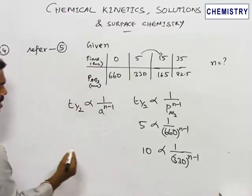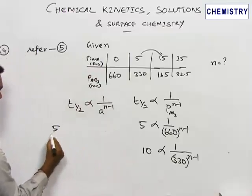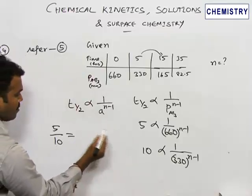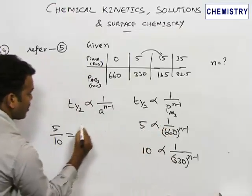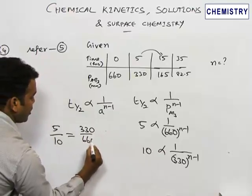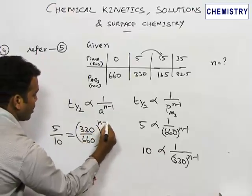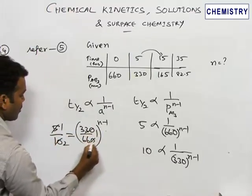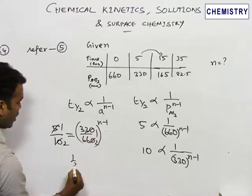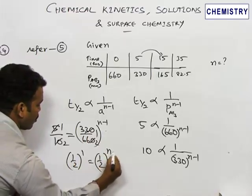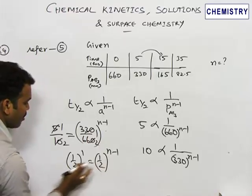Just divide these two, you will get the order for the reaction. So 5 by 10 is equal to, if you divide this by this, you will get 330 in the numerator and 660 in the denominator, whole power n minus 1. This also we can cancel, you will get 1 by 2. So 1 by 2 power 1 here, 1 by 2 power n minus 1.